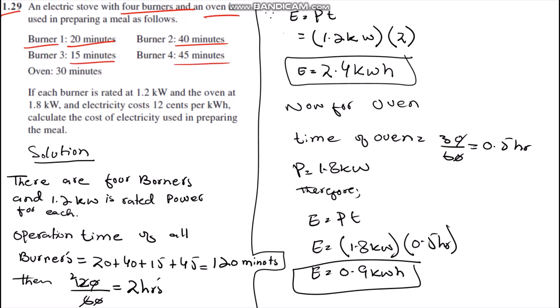There is an oven which is used for 30 minutes. The question is demanding: find the electricity cost of the burner and oven if the cost of electricity is 12 cents per kilowatt hour. The rated power of burners is 1.2 kilowatt and the rated power of oven is 1.8 kilowatt.